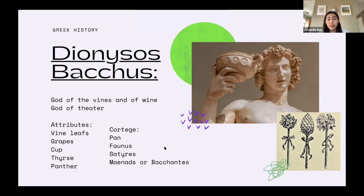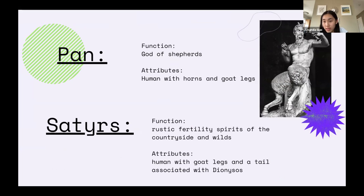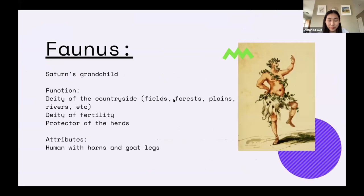His cortege — basically the group of people around him — includes the demigod Pan, Faunus, the satyrs, and the Maenads or Bacchants. Let's talk about the demigod Pan first. Pan is the god of shepherds, which means he protects the animal shepherds, which are a kind of dog. His attributes are a human with horns and goat legs, as we can see here, and he often has a little flute.